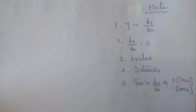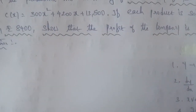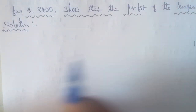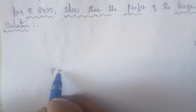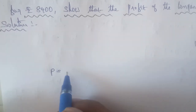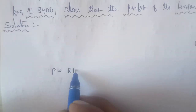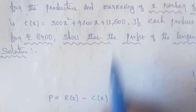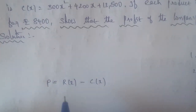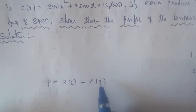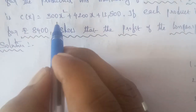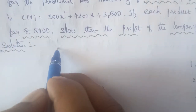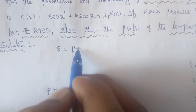Since the given problem asks us to show that the profit is increasing, we need to show it is positive. The profit formula is: P equals Revenue minus Cost. So P of X equals R of X minus C of X. We need the revenue and cost functions.